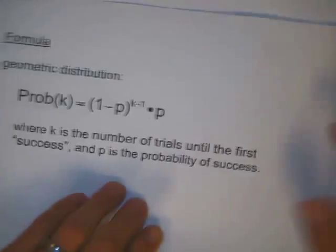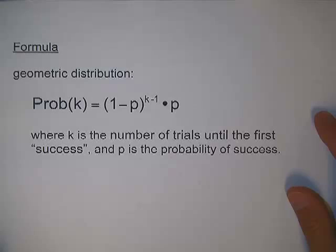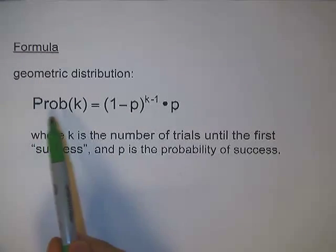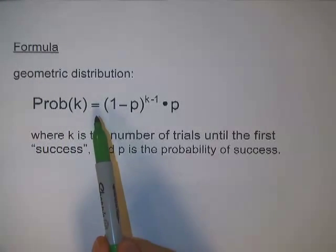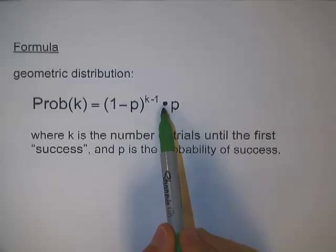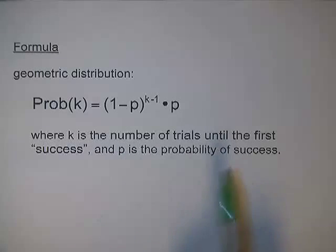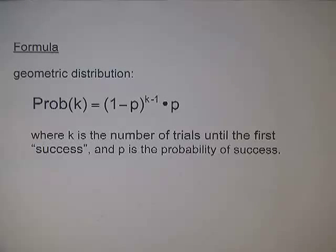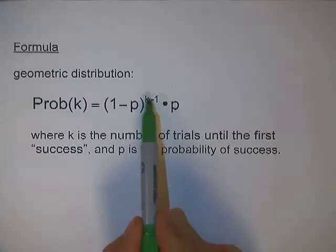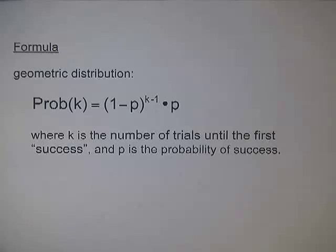Like a binomial distribution, a geometric distribution can be explained using a formula. The formula is: the probability of k equals (1 minus p) to the power of (k minus 1) times p. Here, k is the number of trials until the first success. So if you want to know the probability that it will take six trials until you get your first success, k would equal six, and p represents the probability of success.